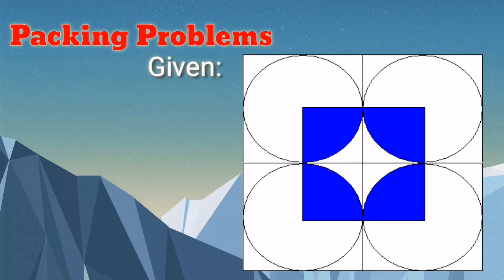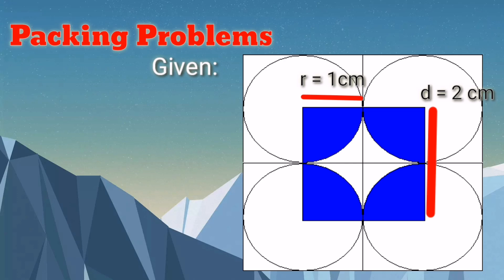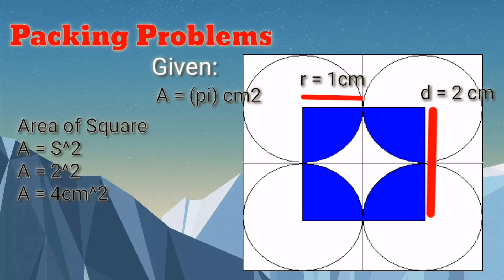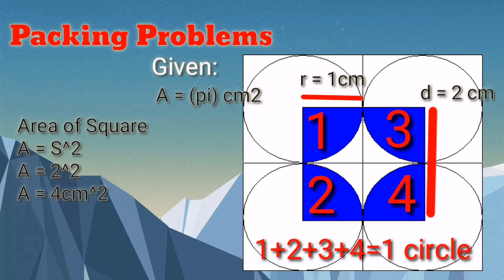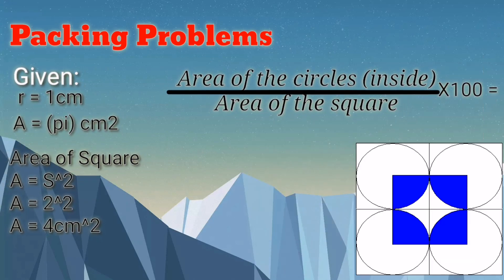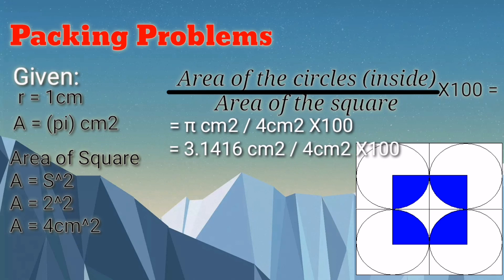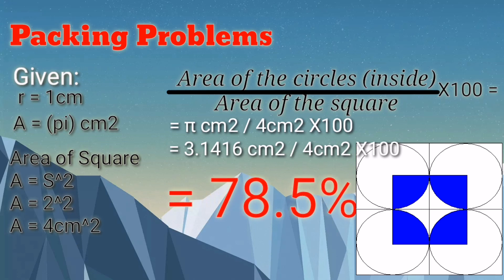Let us illustrate this mathematically. Suppose you have circles of radius one centimeter, each of which will then have an area of pi centimeters squared. We are going to fill a plane with these circles using square packing and hexagonal packing. For square packing, each square will have an area of four centimeters squared. Note that for each square, it can fit only one circle — equivalent to four quarters. The percentage of the square's area covered by the circle will be the area of the circles over the area of the square times 100 percent. That gives us 78.5 percent.